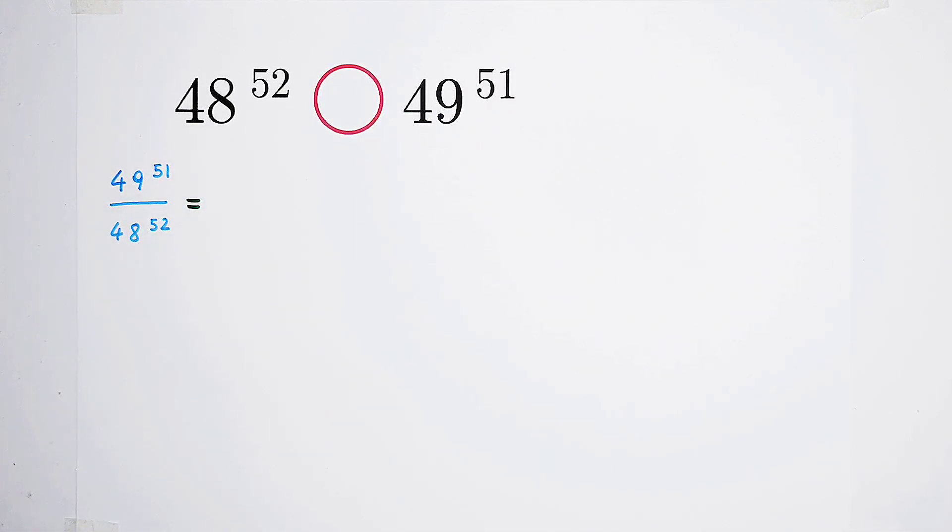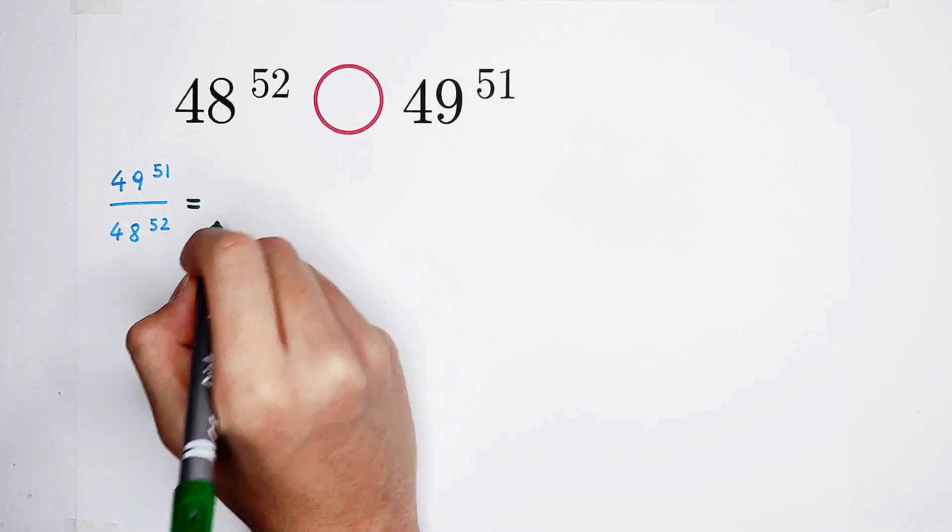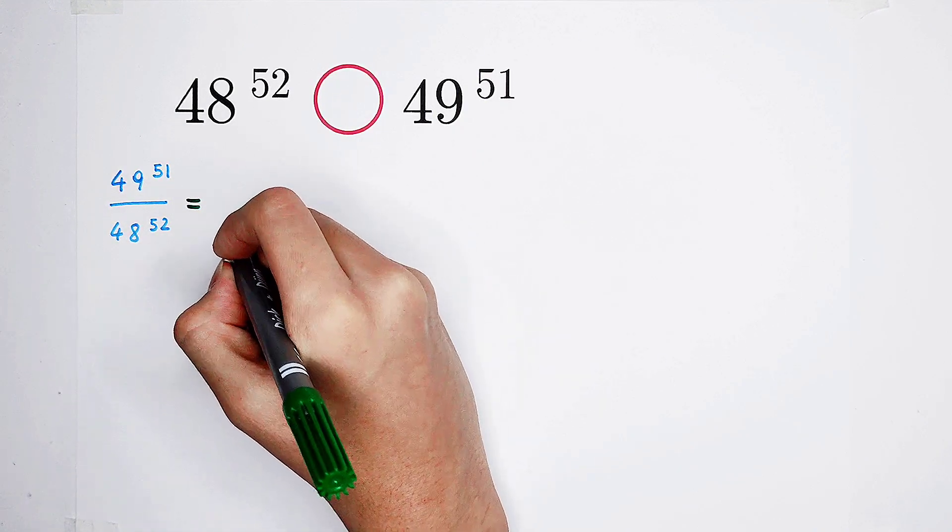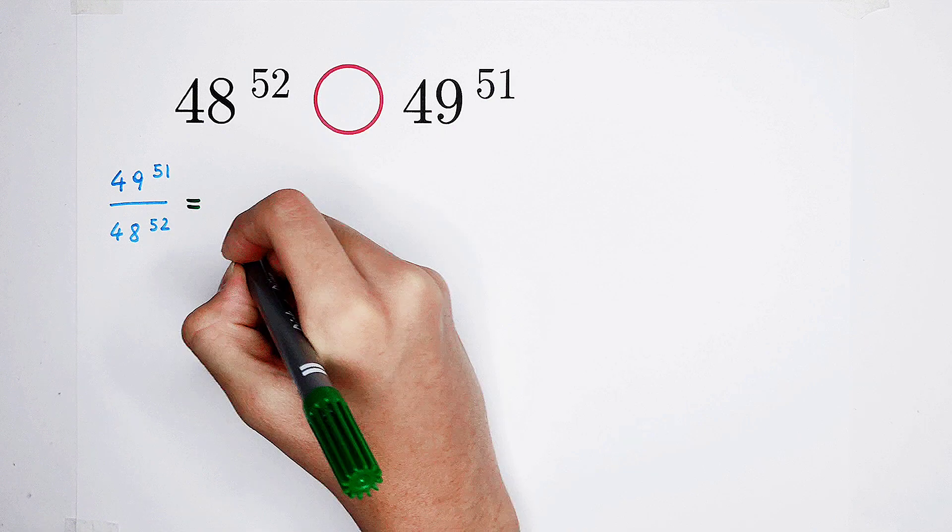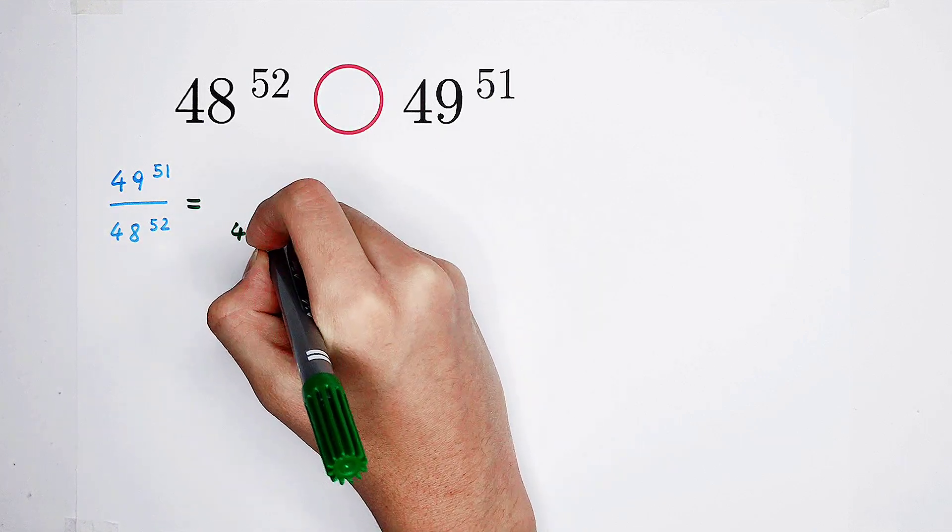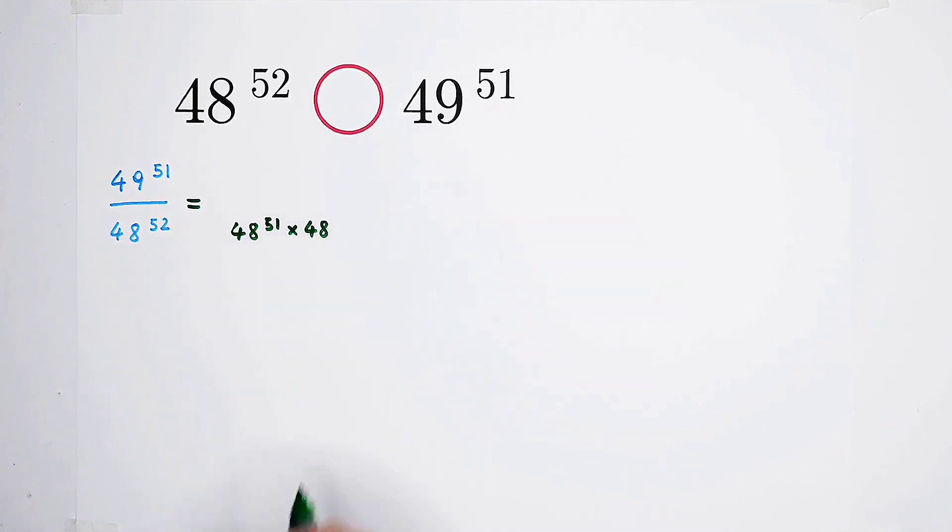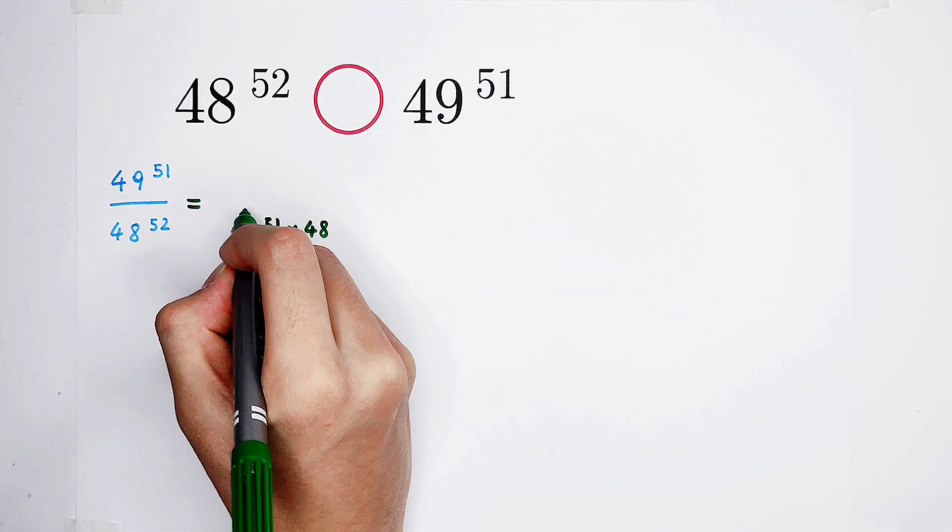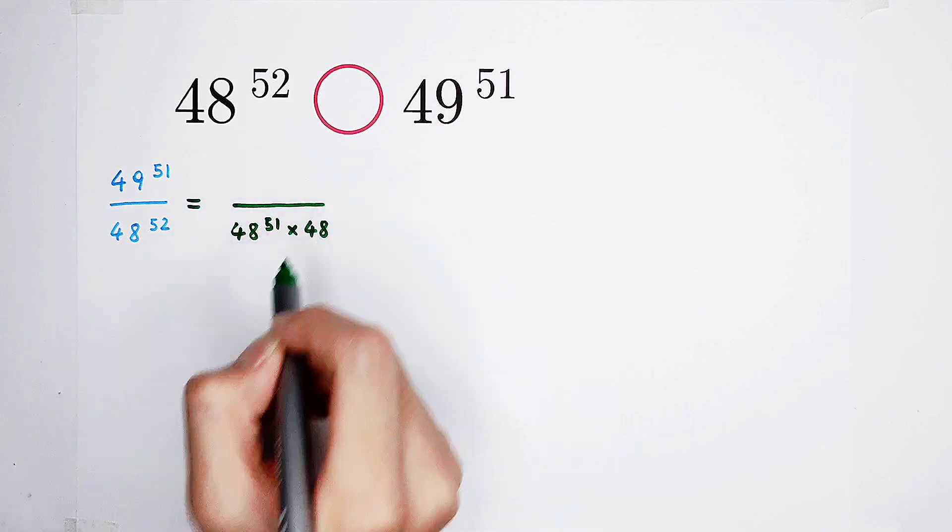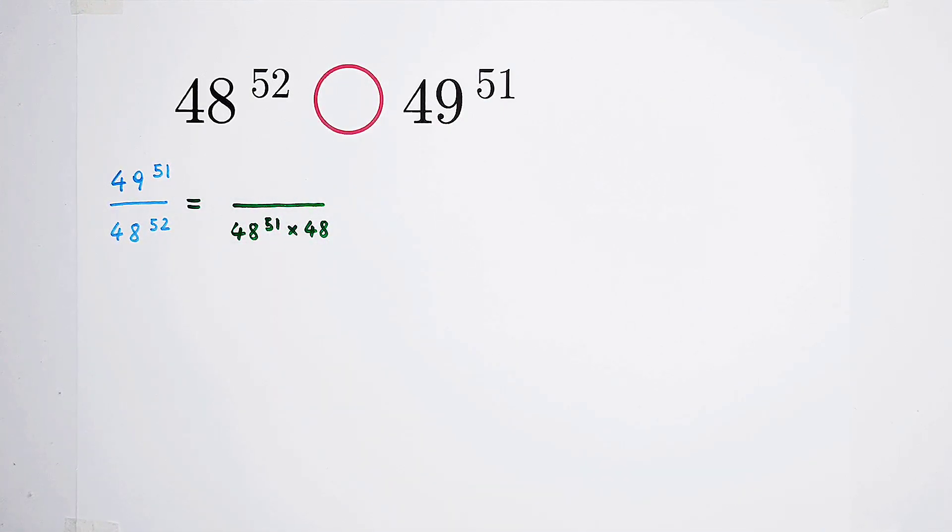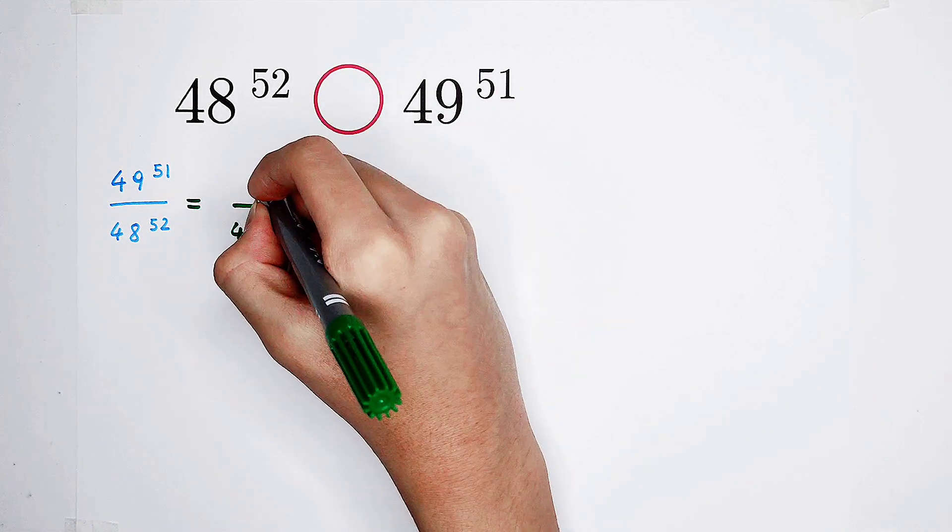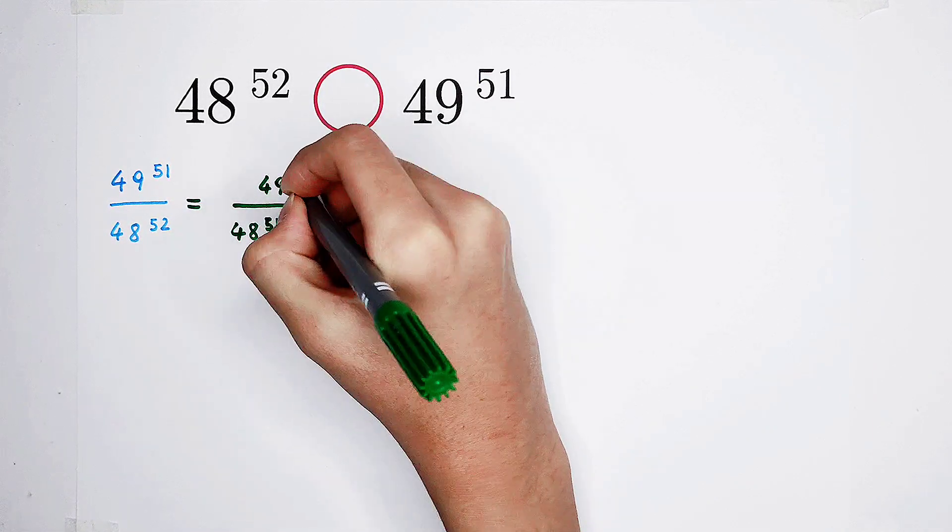Okay, splendid idea. So the numerator can be written as 48 to the power of 51, then times 48. What about the numerator? The numerator stays at its place. 49 to the power of 51.